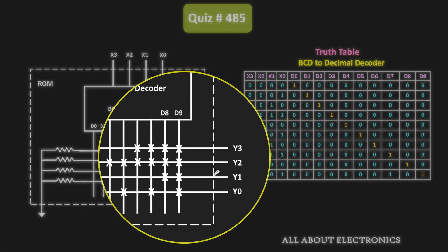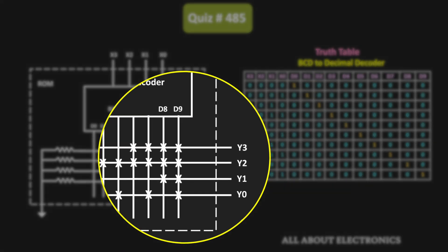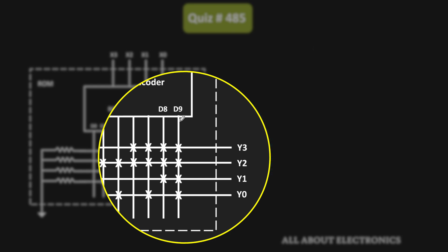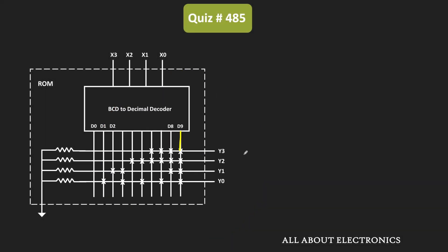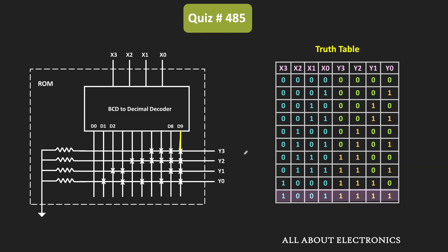The Y3, Y2, Y1, and Y0 output lines are interconnected with the D9 output. That means whenever D9 is high, all outputs Y3, Y2, Y1, and Y0 will become high. Likewise, when D8 output is high, then Y3, Y2, and Y1 will become high, while Y0 will remain 0.